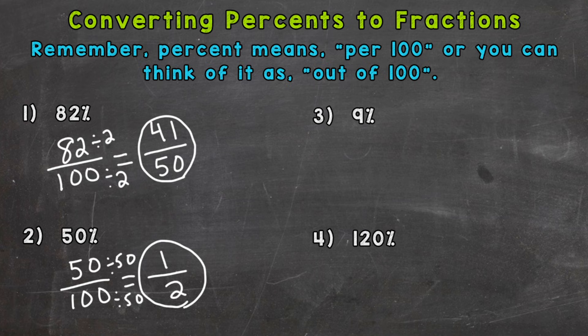Number 3, 9 percent. So that's 9 out of 100, and that fraction is already in simplest form. So 9 percent equals 9 hundredths, or 9 out of 100.